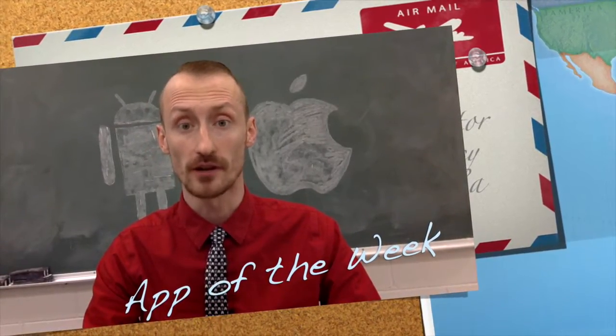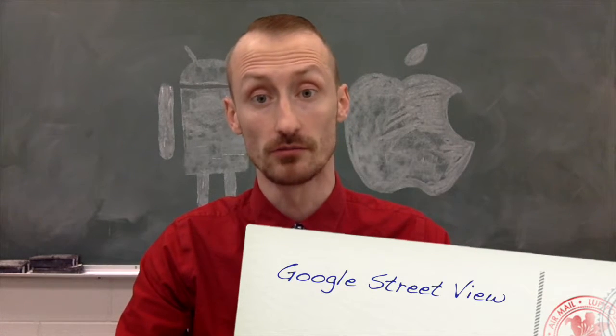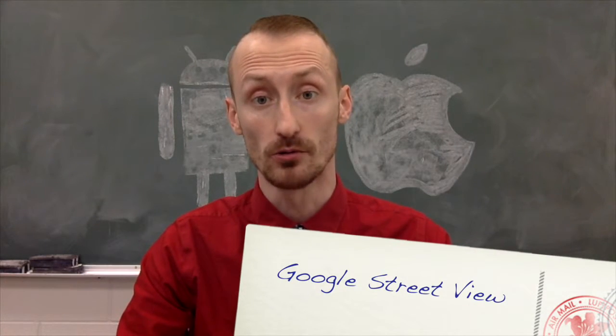Hey YouTube, this is Daniel Vanover and welcome back for another App of the Week. This week we're going to explore Google Street View, an app developed by Google that integrates into Google Maps and allows you to view 360-degree photos on your iPhone or Android. It will also let you create your own 360-degree photos based on your location and then share those photos with Google Maps. It's a really neat way to explore a location or setting without leaving the classroom.